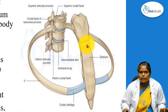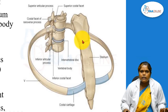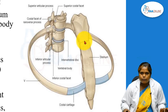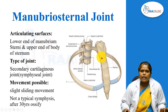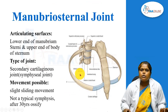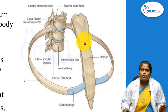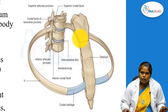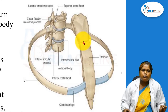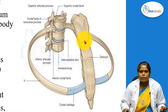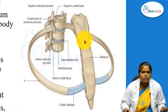These two parts articulate to form the manubrio-sternal joint. For any joint we have to learn the type of joint. This is a secondary cartilaginous type of joint, otherwise known as a symphysial joint. The symphysial joint always present along the midline — the manubrio-sternal joint is an example of a symphysial joint.